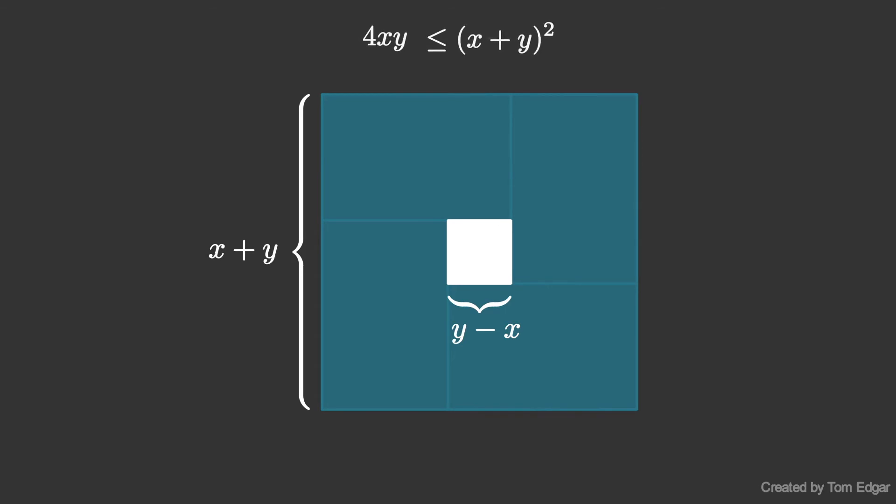Taking the square root of both sides, we obtain the inequality square root of 4xy is less than or equal to x plus y.